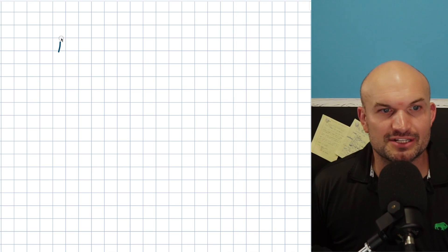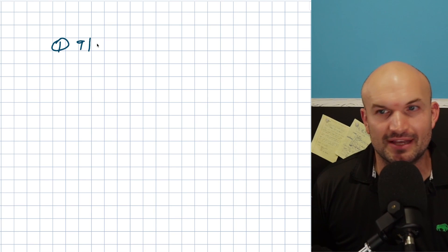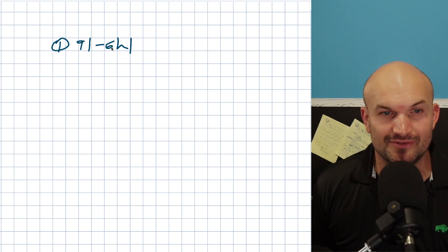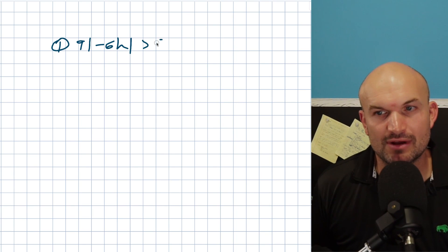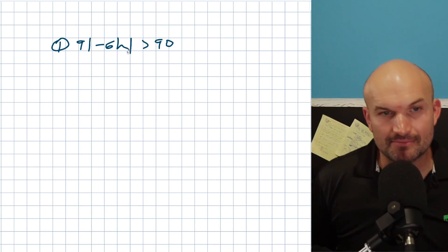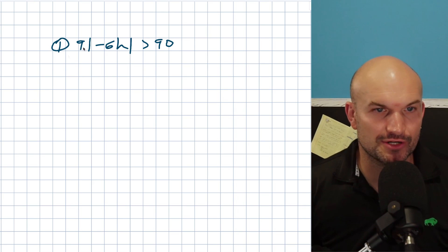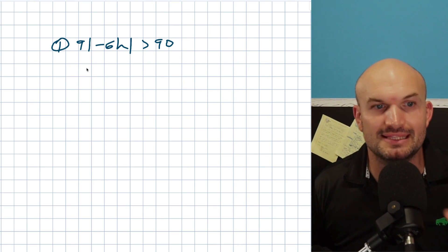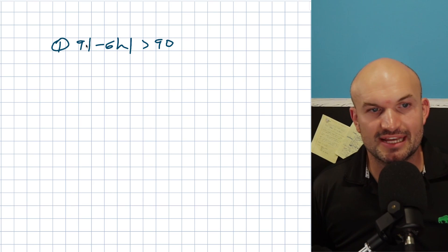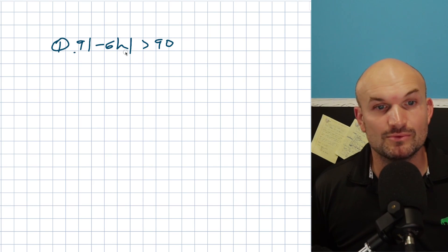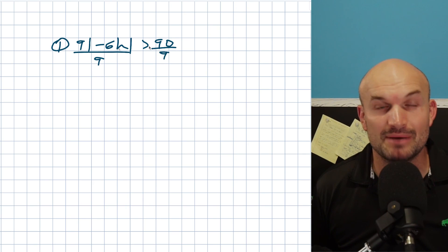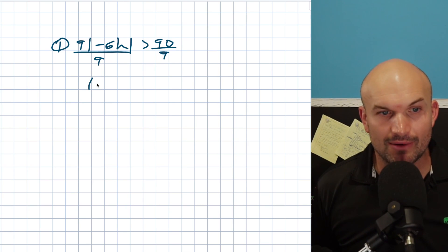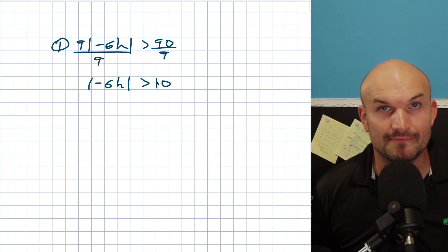The first example deals with an absolute value that's being multiplied by a number. I have nine times the absolute value of negative six H is going to be greater than 90. The main important thing we need to understand when solving absolute value equations or inequalities is to isolate the absolute value. My absolute value has been multiplied by nine, so I'm going to divide by nine on both sides. Now I have the absolute value of negative six H is greater than 10.